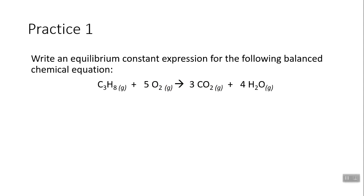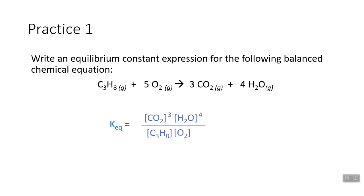Let's look at example one: write an equilibrium constant expression for the following balanced chemical equation. We start with our products in the numerator — carbon dioxide in brackets raised to the third power because the coefficient is three, water in brackets raised to the fourth power — and in the denominator C₃H₈ times O₂ raised to the fifth power.